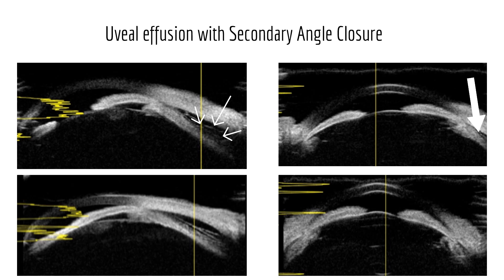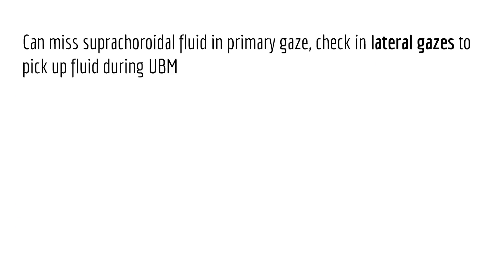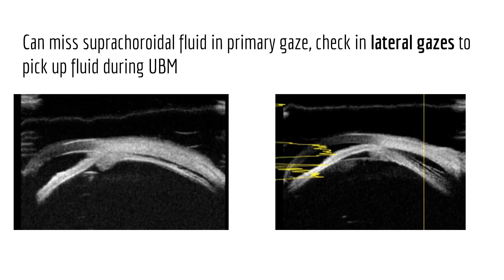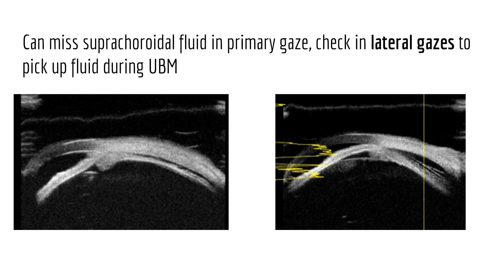This is a 16-year-old VKH patient who presented with high IOP and shallow AC. B-scan showed exudative retinal detachment. UBM showed extensive suprachoroidal effusion with secondary angle closure in both eyes. It is important not to treat these eyes with PI. Steroids and cycloplegics will suffice for management.